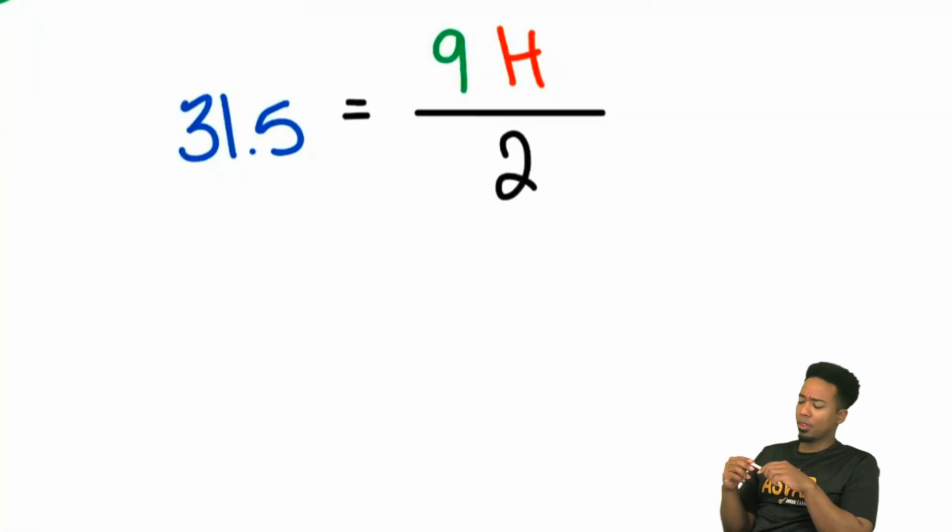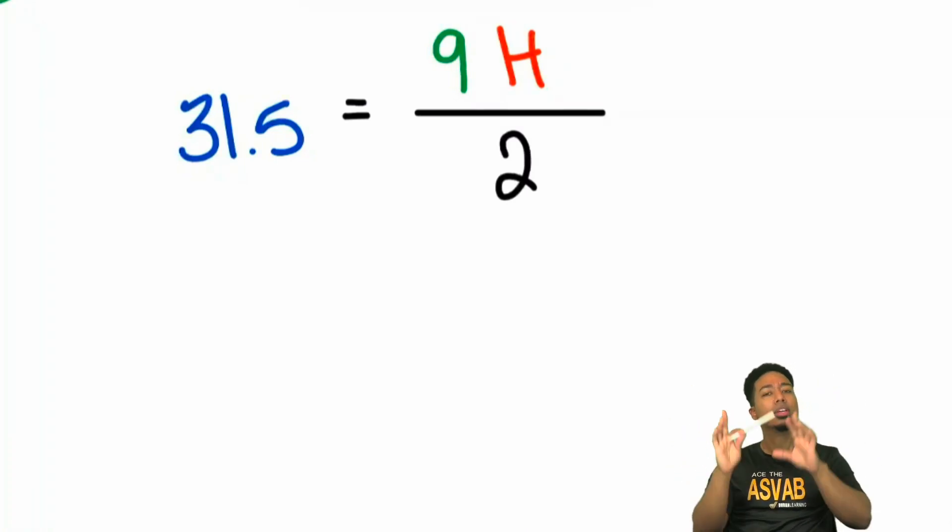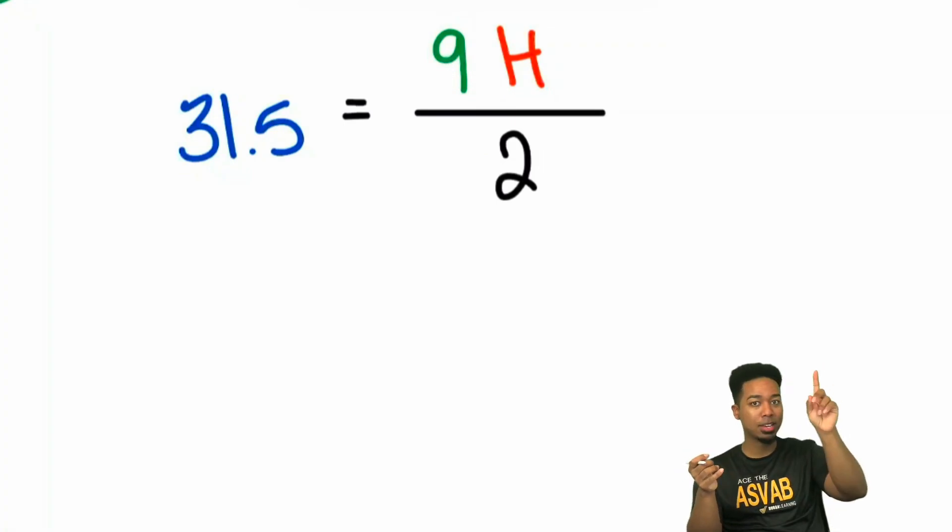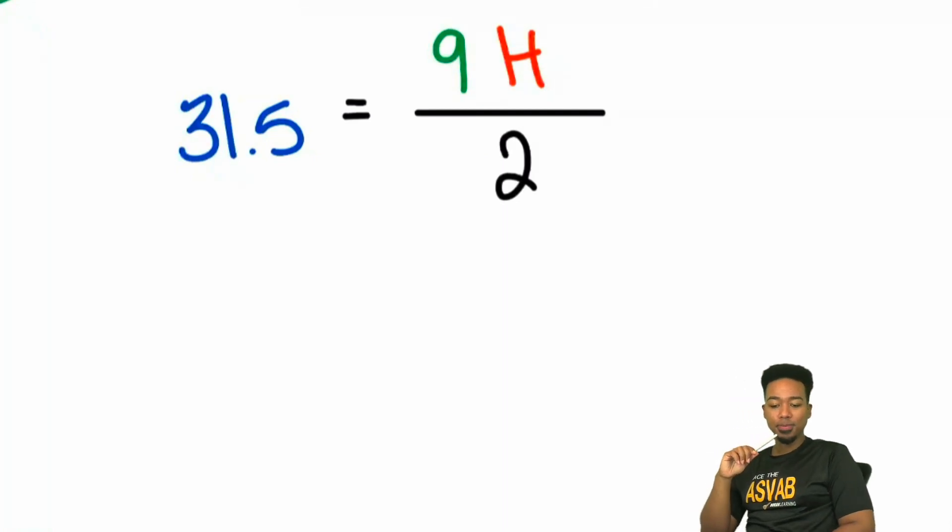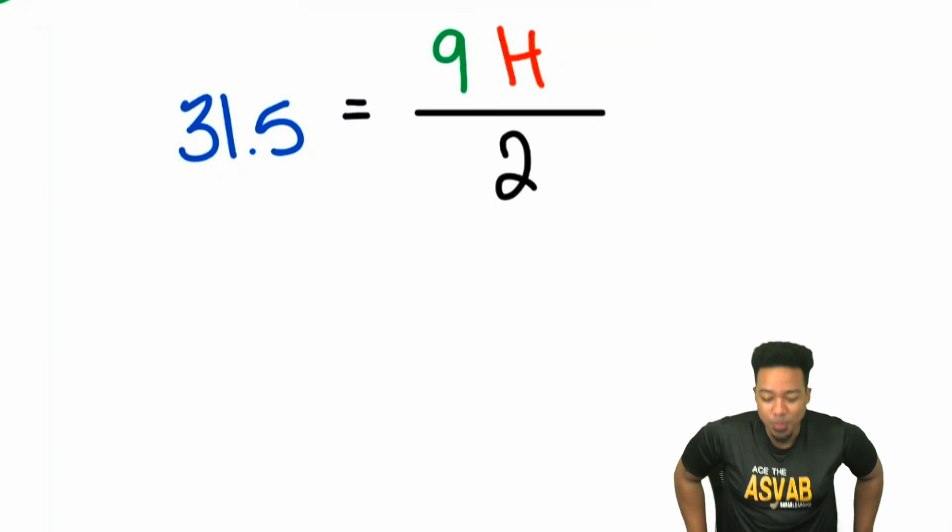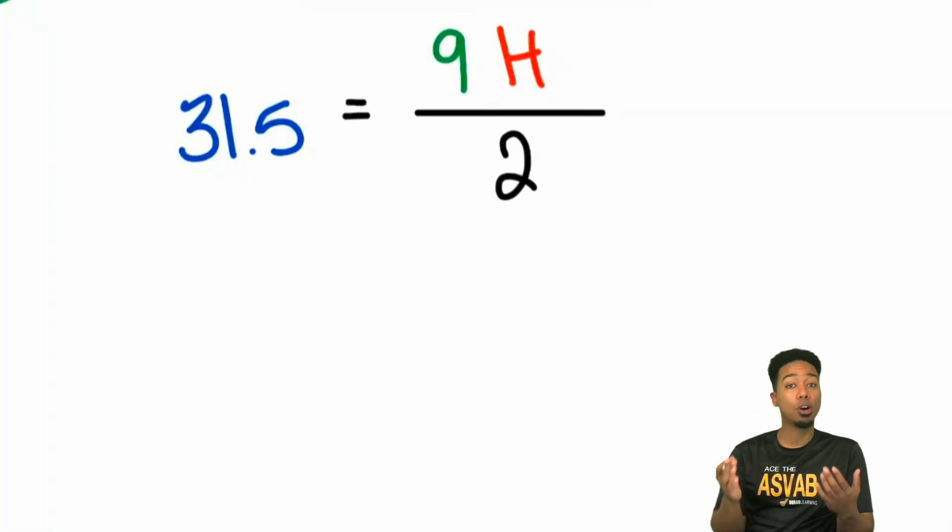Now, before I continue, let's just do a quick pulse check. Everybody, do we understand how we got to this point? Are you confident that you know how we got to this point? The two's part of the formula. So because we're dealing with the area of a triangle, we'll use the formula for a triangle, which is area equals base times height, divided by two that you see right there. That's how I got there. Excellent. So now that we're here, gang, we're going to solve this equation.